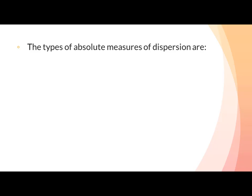The types of absolute measure of dispersion are: Range — it is simply the difference between the maximum value and the minimum value given in a data set. For example, given the data set {1, 3, 5, 6, 7}, range is equal to 7 minus 1, which equals 6.